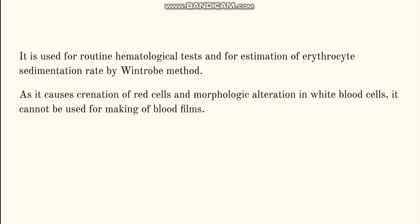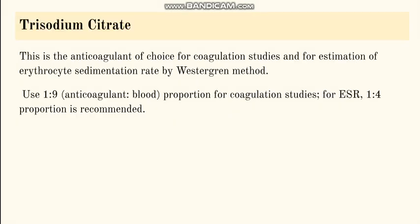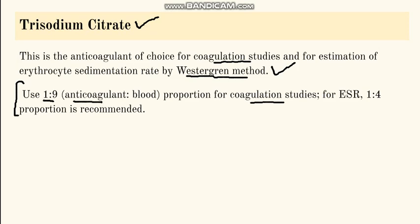Now, trisodium citrate is used for ESR estimation by Westergren's method, and also for coagulation studies. The proportion is different depending on the use: for coagulation studies, a 1 to 9 proportion is used — one part anticoagulant and nine parts blood. However, for ESR estimation, a 1 to 4 proportion is used. This is important to remember.